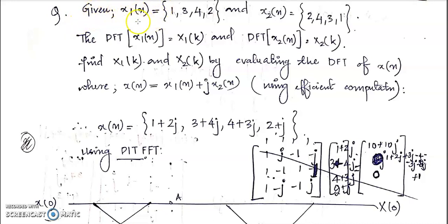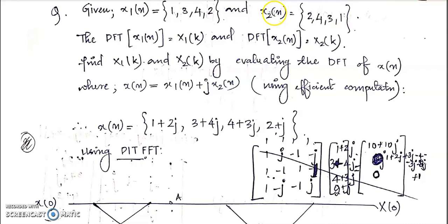In the question, given x1(n) is a four-point sequence and x2(n) is also another four-point sequence. The DFT of x1(n) is denoted by x1(k) and DFT of x2(n) is denoted by x2(k). We want to compute their DFTs using an efficient method — that means using a single DFT, you want to compute the value of x1(k) and x2(k). Using a single N-point DFT function, you want to compute the value of x1(k) and x2(k).